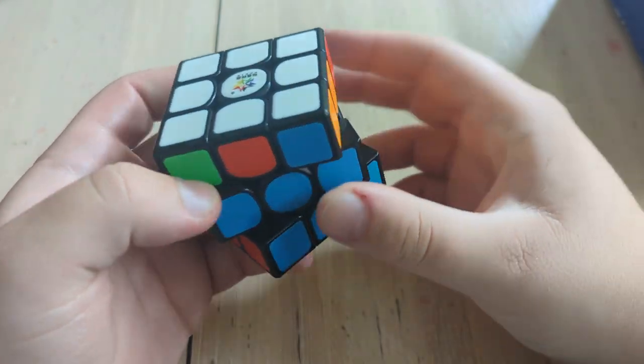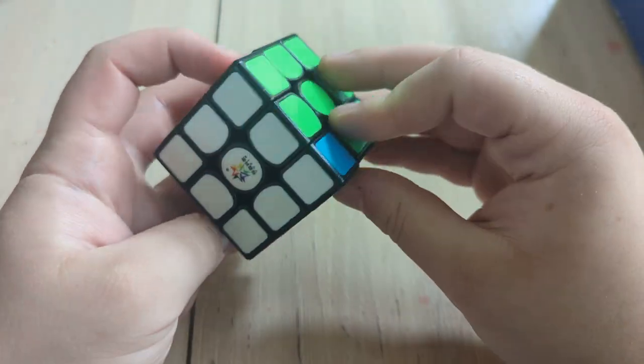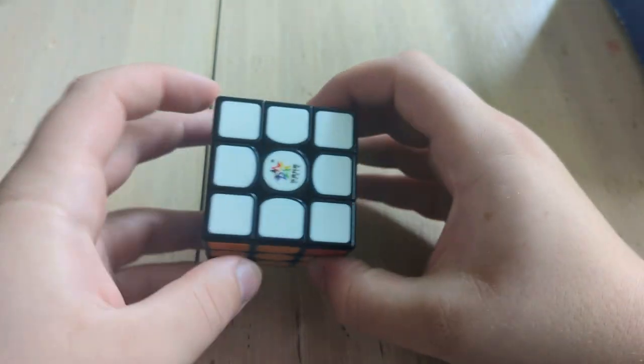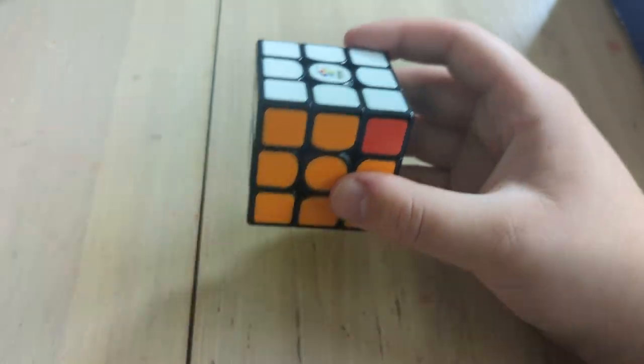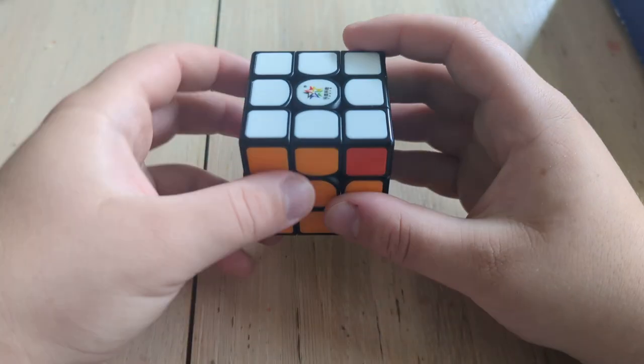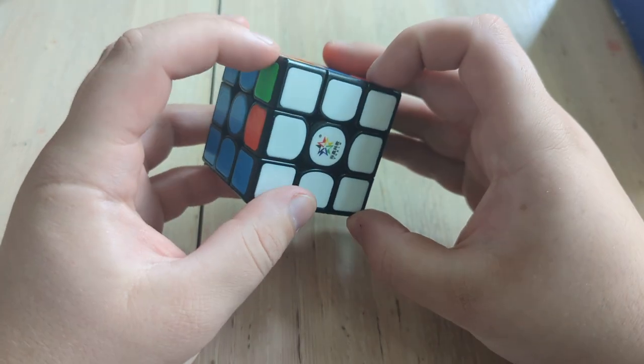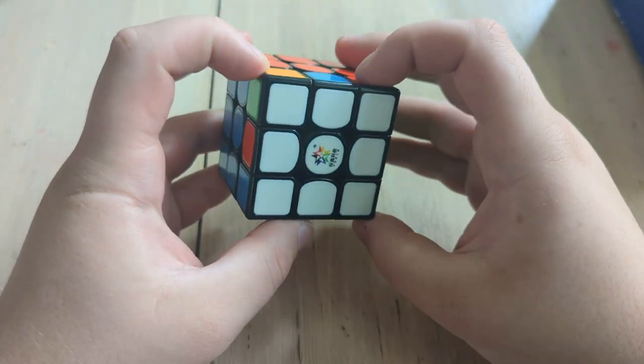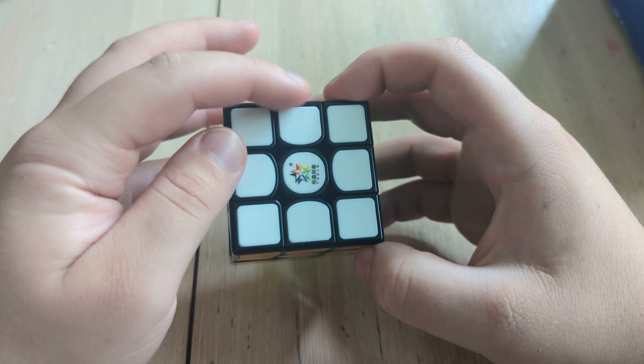And we already have OLL just by virtue of the method. Now this is an opposite swap. From here, you can solve this however you want. For instance, I think this is some sort of V-perm. Yeah, this is a V-perm. No, this is a Y-perm.